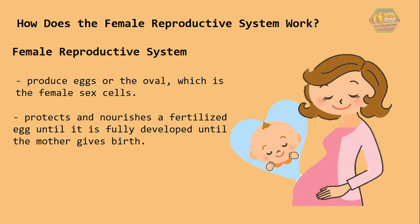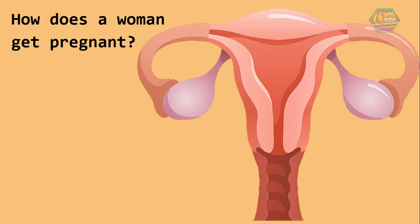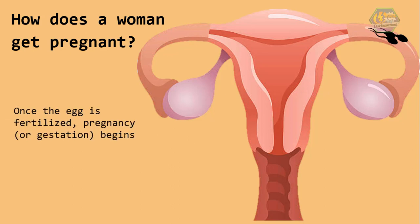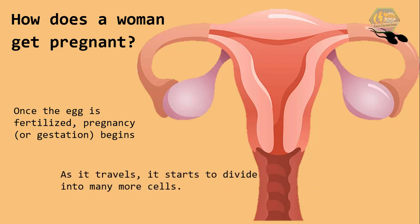Now, how does a woman get pregnant? Sperm enters the woman's body through the vagina. The sperm swim up through the uterus and into the fallopian tubes. If an egg is in one of the fallopian tubes, the sperm try to join with it. Once the egg is fertilized, pregnancy or gestation begins. The fertilized egg moves into the uterus. As it travels, it starts to divide into many more cells.